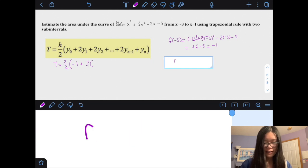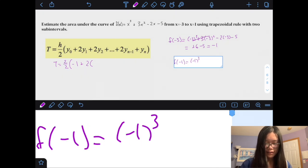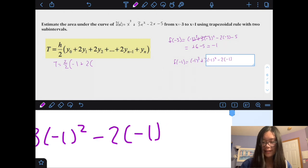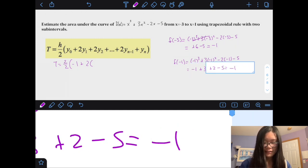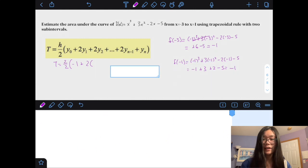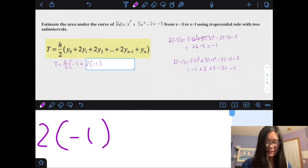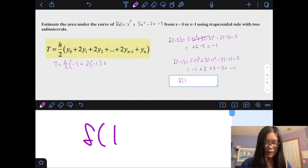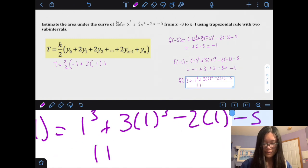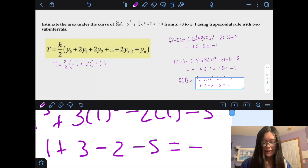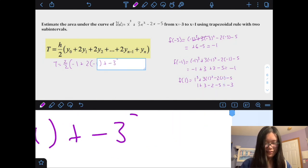And then, f of negative 1 equals negative 1 cubed plus 3 and negative 1 squared, sorry if I'm going a little sloppy, I'm not trying to take up too much time, but I do want to show you all the work. So, this would be negative 1 plus 3 plus 2 minus 5, which equals negative 1, okay. Alright, and then finally, this last value, don't multiply by 2, so just leave it, f of 1, which is pretty straightforward, 1 plus 3 minus 2 minus 5 is, what is it, negative 3, so negative 3.